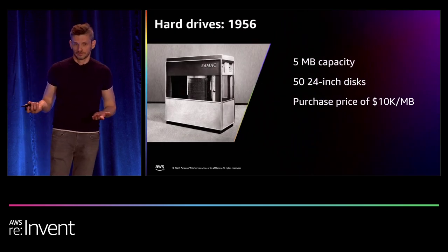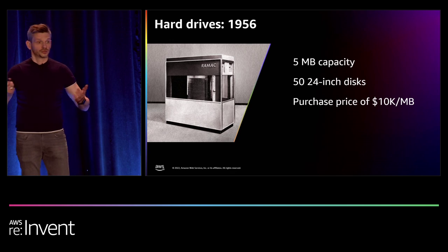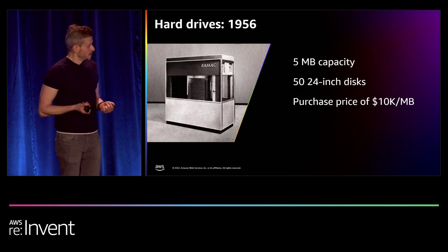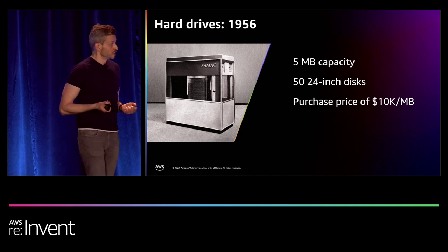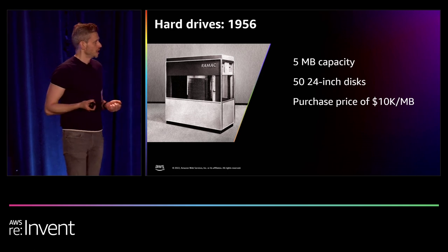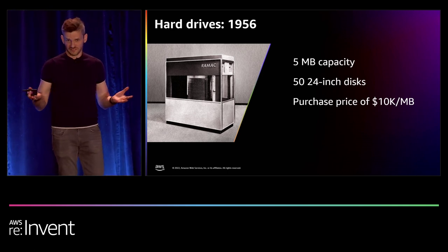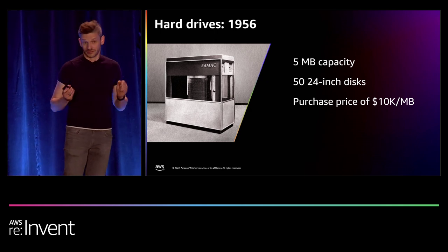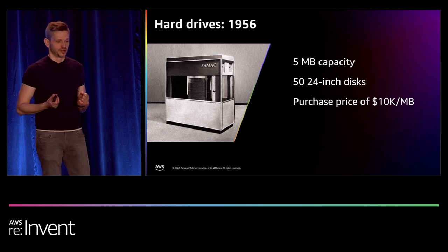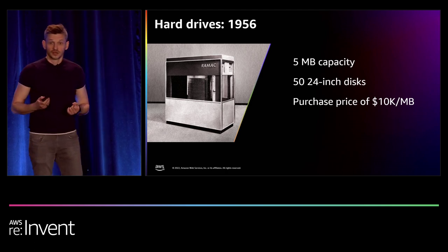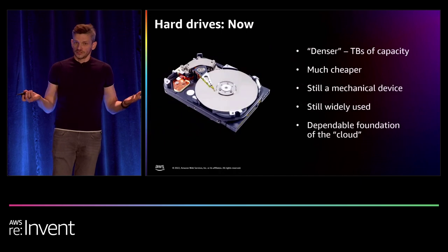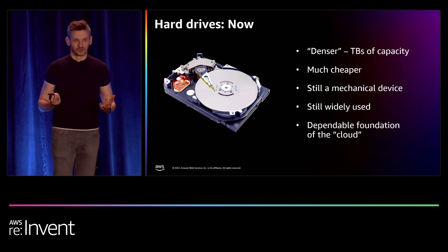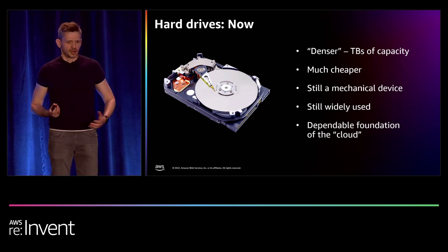Cloud is somebody else's computer, so all of your data is eventually written on some kind of media. The first commercially available large-scale media was a hard drive. It was pretty bulky — the size of a vending machine, requiring three or four people to carry it. It retained a lot of data for its time, close to five megabytes. It was also very expensive — close to $50,000 back in 1956. A lot of things have changed now, but as we'll discover, some actually remain the same, and that's very significant.